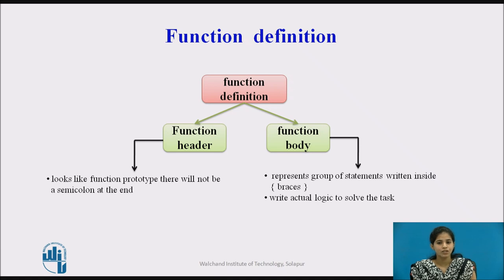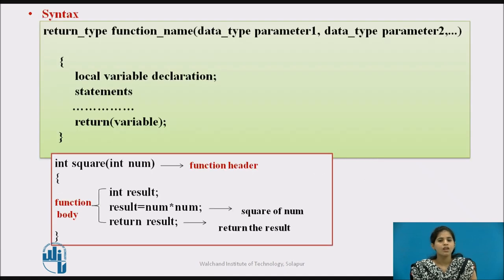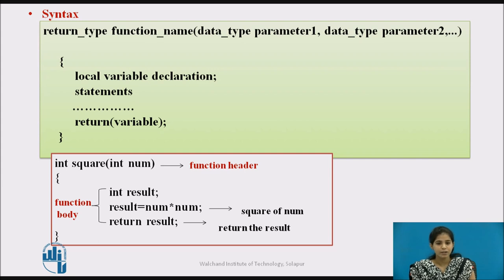The function body contains the declarations and statements necessary to perform the required task. The function body is enclosed within curly braces and consists of three parts: local variable declaration if required, function statements to perform the task inside the function, and a return statement to return the result evaluated by the function. If the return type is void, then no return statement is required.